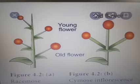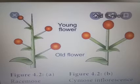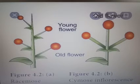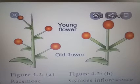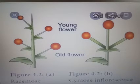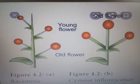In racemose inflorescence, the axis grows continuously and the flowers show acropetal succession — older flower at the base and younger flower at the top. Example: cassia and Crotalaria. In cymose inflorescence, the axis ends in a flower; growth is continued by lateral buds and shows basipetal succession — old flowers at the top, young flowers below. Example: jasmine.